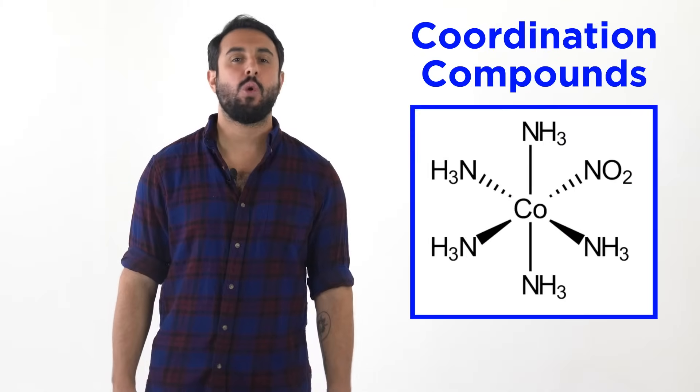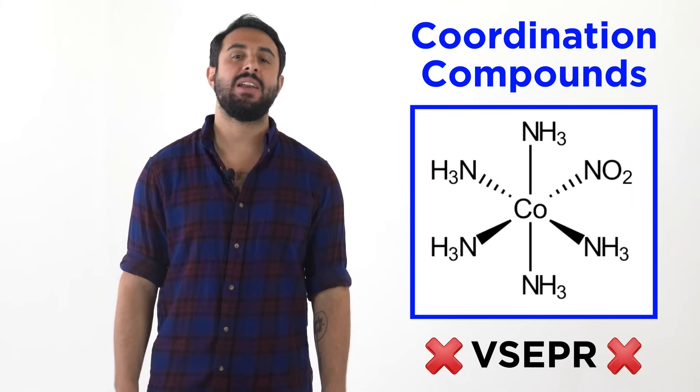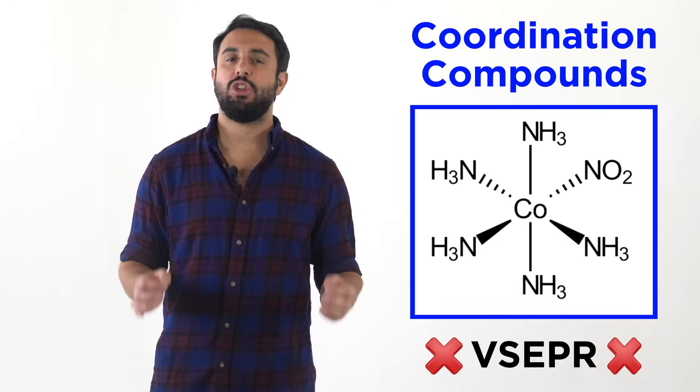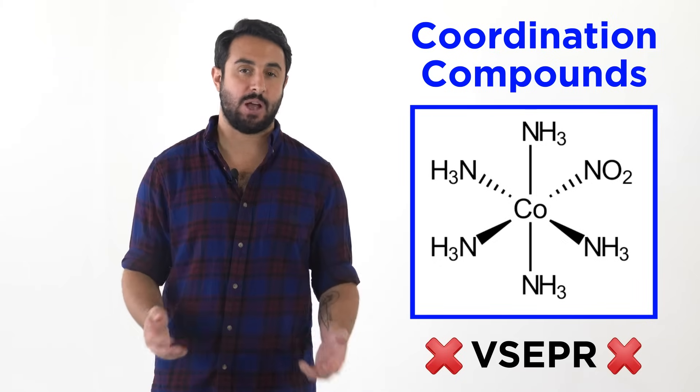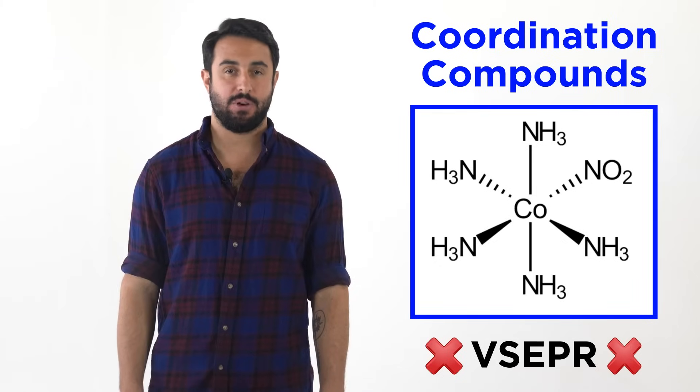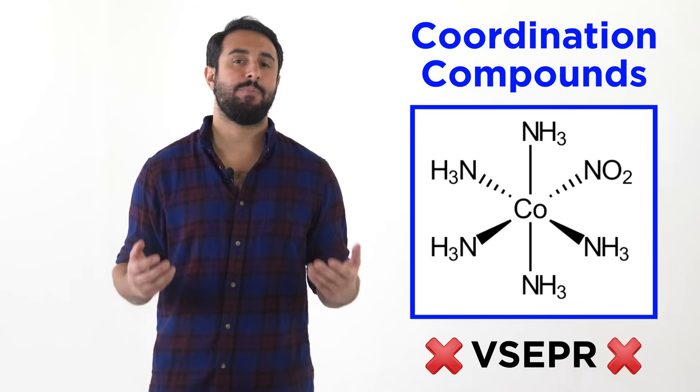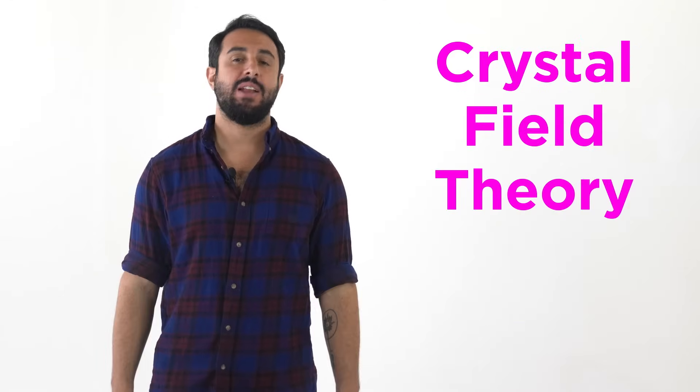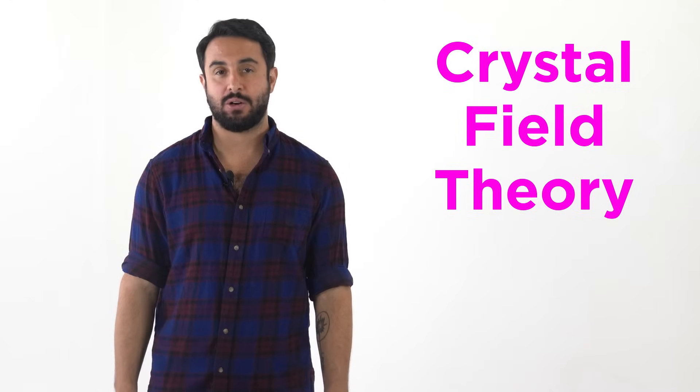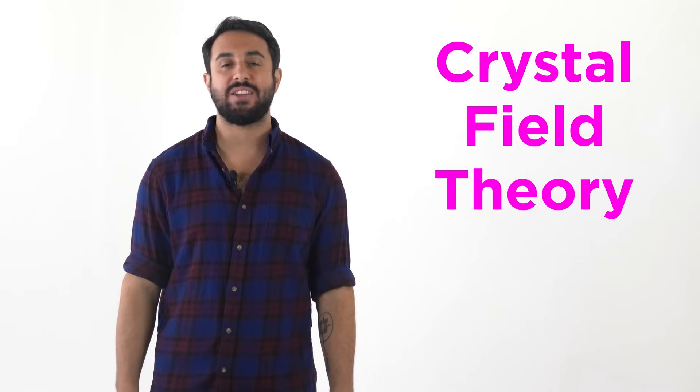Professor Dave and Chegg here. Coordination compounds can have some very interesting geometries, and many of these can't be explained using the same models that we use for normal covalent compounds, such as VSEPR theory. This is because the type of bonding involved is more complex than the mere overlapping of hybridized orbitals. Instead, we have to use another model called crystal field theory, so let's go through the finer points of this theory now.